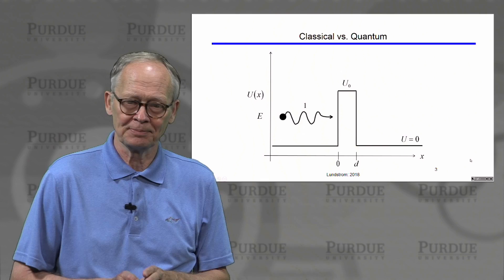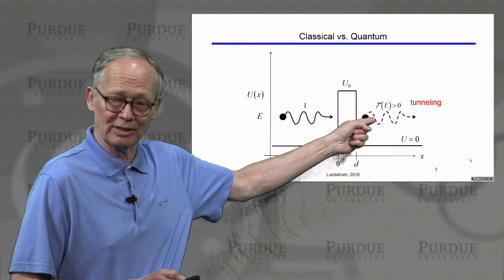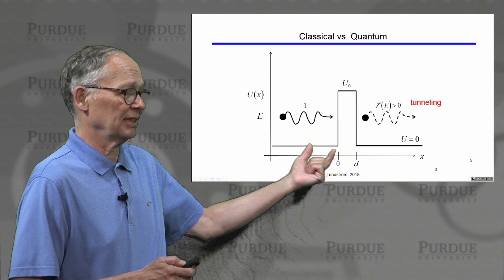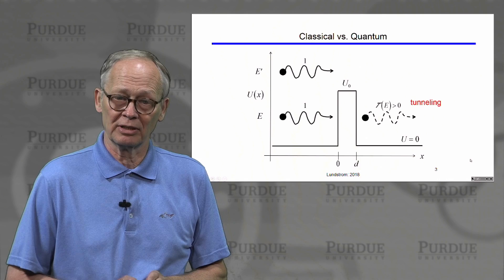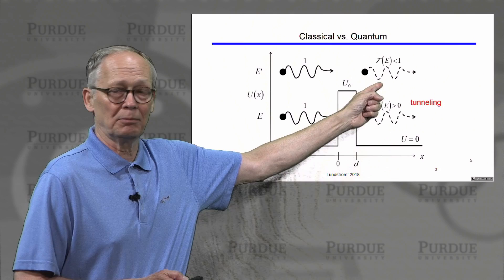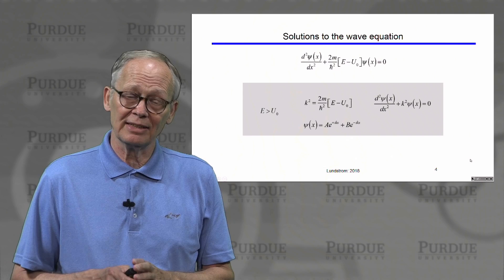But electrons are quantum mechanical particles, so they are actually waves at the same time. If an electron at energy E, less than the energy of the barrier, encounters the barrier, there is actually some probability that the electron can tunnel or leak through — a small or considerably significant probability depending on the width and height of the barrier. On the other hand, an electron with energy E prime above the top of the barrier might not completely transmit across; some of it might reflect. These two phenomena are what we want to understand.